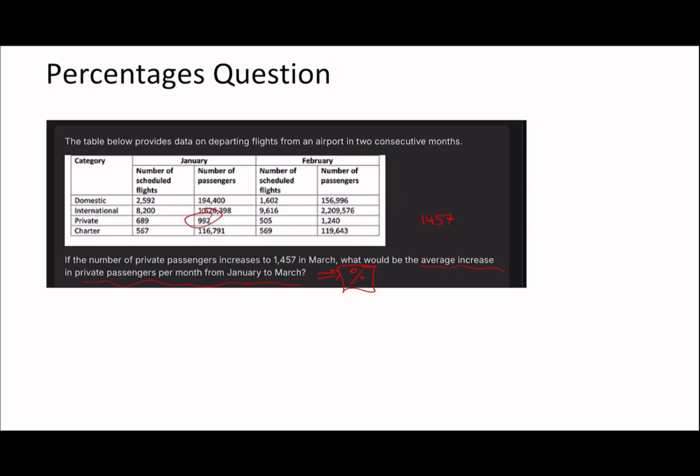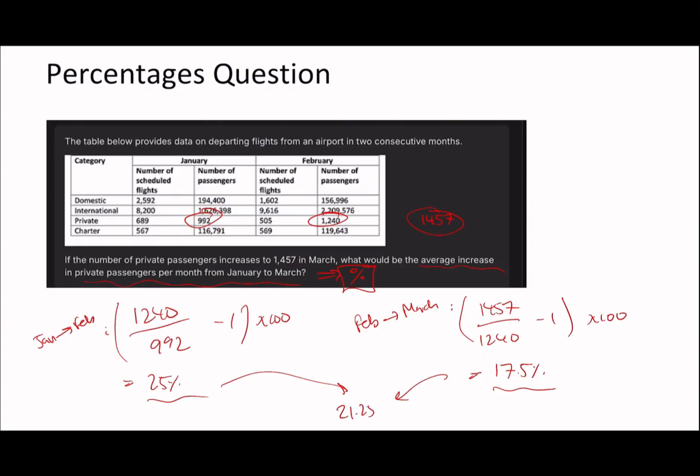So what would be the average increase in private passengers per month from January to March, given as a percentage? The way they've done it is calculate the individual changes. So percentage change from Jan to Feb, which is 1240 over 992, subtract 1 times 100. So 1240 divided by 992, subtract 1 times 100, which is 25%. Then they've done Feb to March, which is 1457 divided by 1240 minus 1 times 100, which is 17.5%.